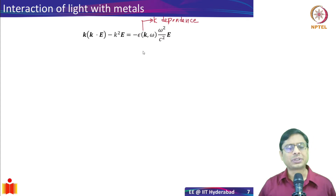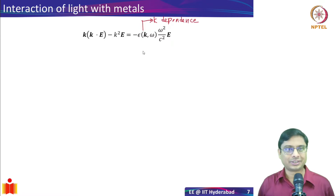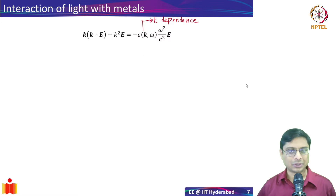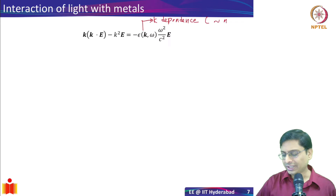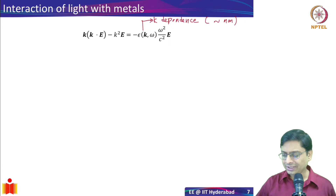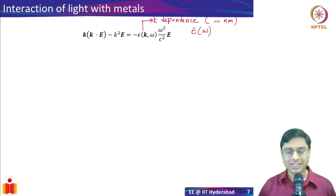This is what we call non-locality in the literature. It essentially means the epsilon can even depend on the size of the structure, but this is only applicable when the structures are very, very small — for example, thin films of less than one nanometer or nanoparticles of that scale. If the object is of that size we have to worry; if not, we simply call it epsilon of omega, meaning epsilon only depends on frequency.